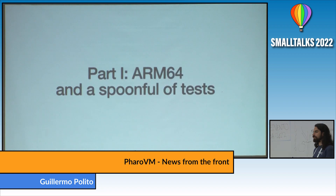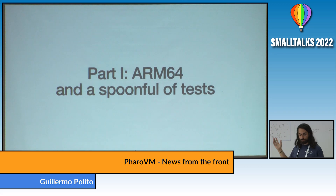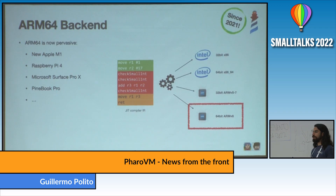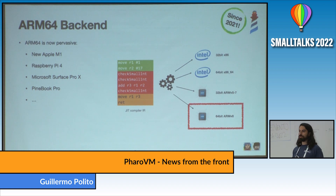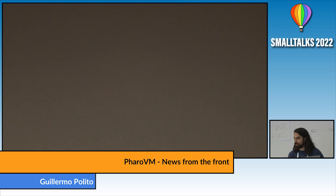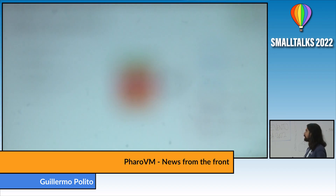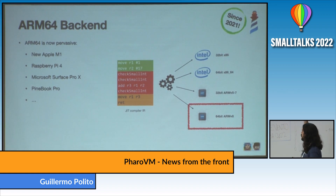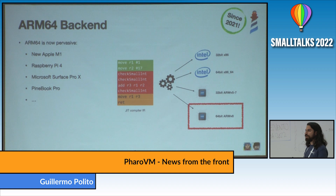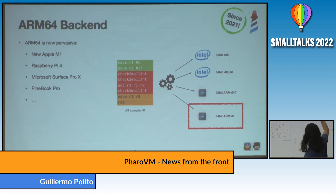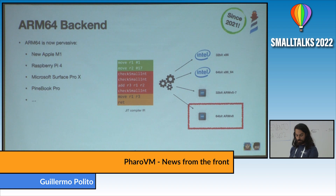I wanted to start talking about ARM64, which is something we started two years ago — ARM64 and a spoonful of tests. Why did we implement the ARM64 backend? Most people here are probably not in the hardware space, but what's important is that now we have many machines with an ARM64 CPU: the new Apple M1, M2, Raspberry Pis, the new Microsoft Surface tablets, Pinebooks — cheaper Linux machines. They have new CPUs and we wanted a JIT compiler for that. So we started working, myself and Pablo, on the JIT backend for the VM.